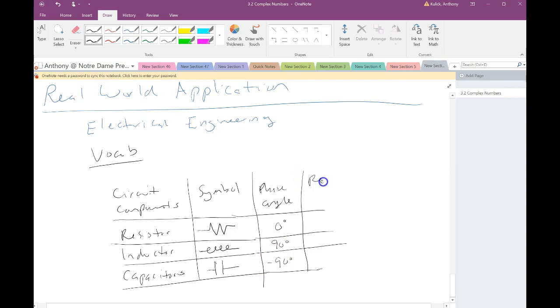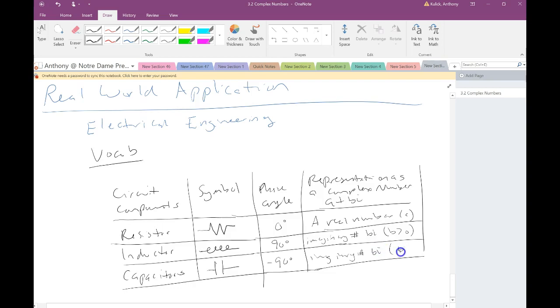So the phase angle, not super relevant to us, but you might know something about electrical engineering. That's not so important to us as the representation as a complex number. And by complex number, I mean a plus bi. So the resistor, we can represent as a real number, basically a. The inductor is an imaginary number where that b value is positive. And the capacitor is also an imaginary number where that b value is negative.